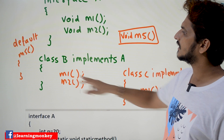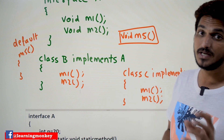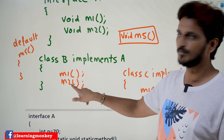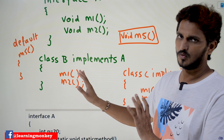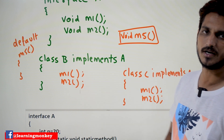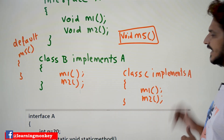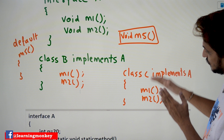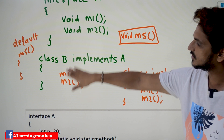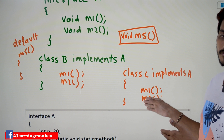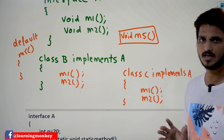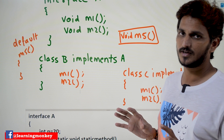Now assume that class B implements A, meaning class B is implementing A. Class B has to define the body of M1 method and M2 method. So class B implemented M1 method and M2 method. Similarly, class C implements A, so class C should also implement M1 method and M2 method. Both classes write their own logic for M1 and M2 — and both logics are different for class B and class C. This is the basics of interfaces.